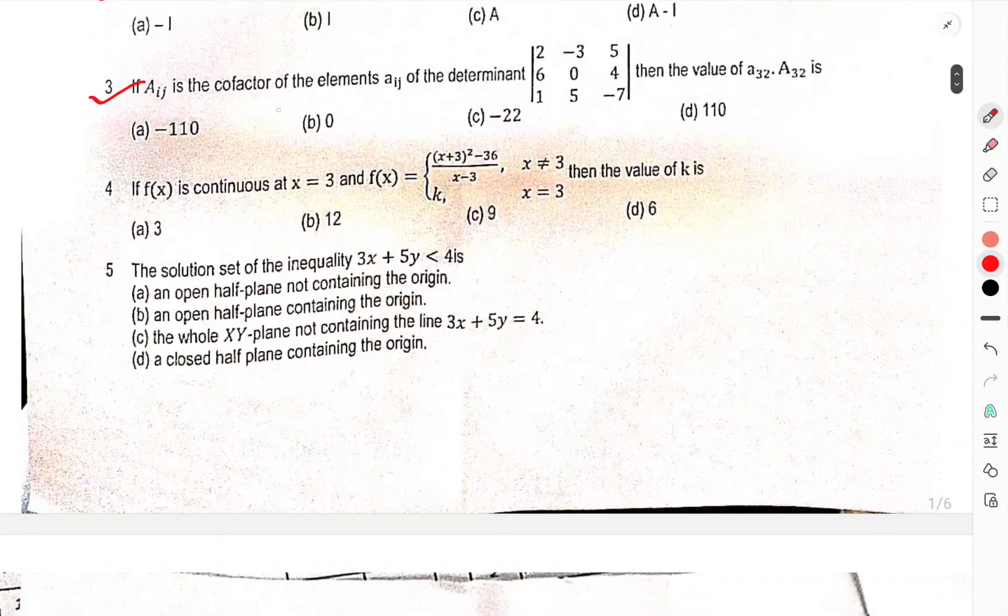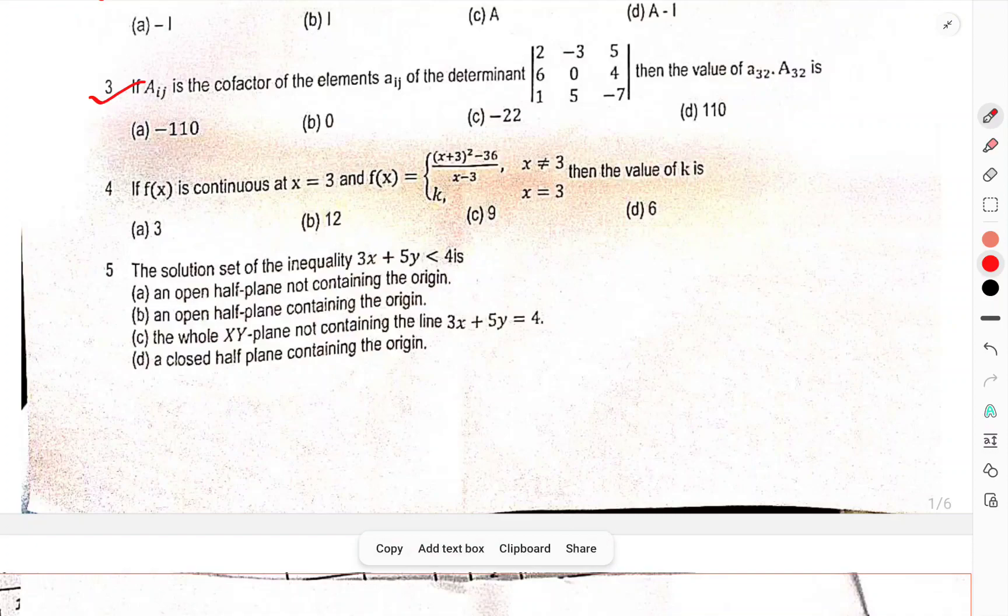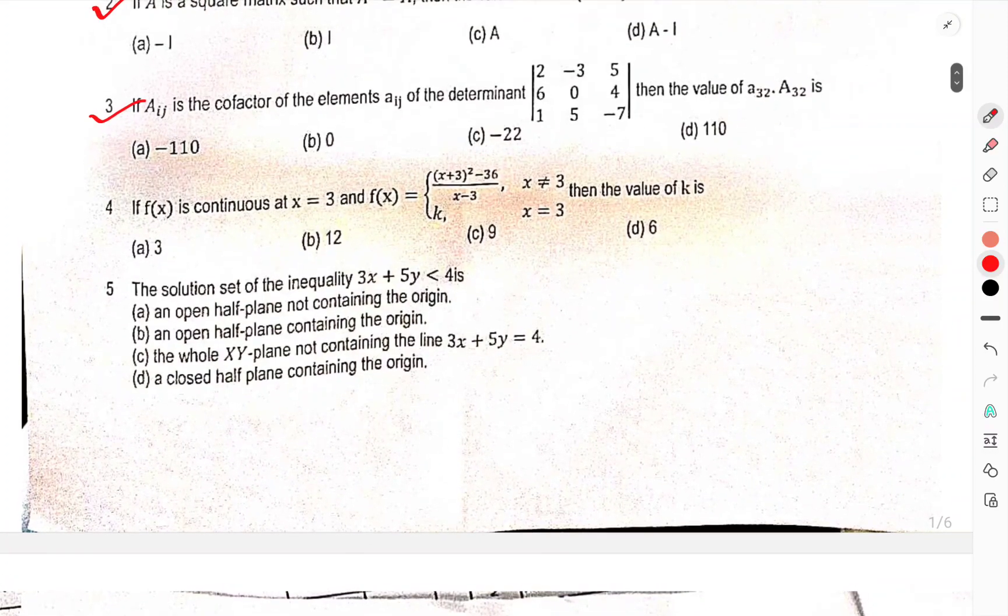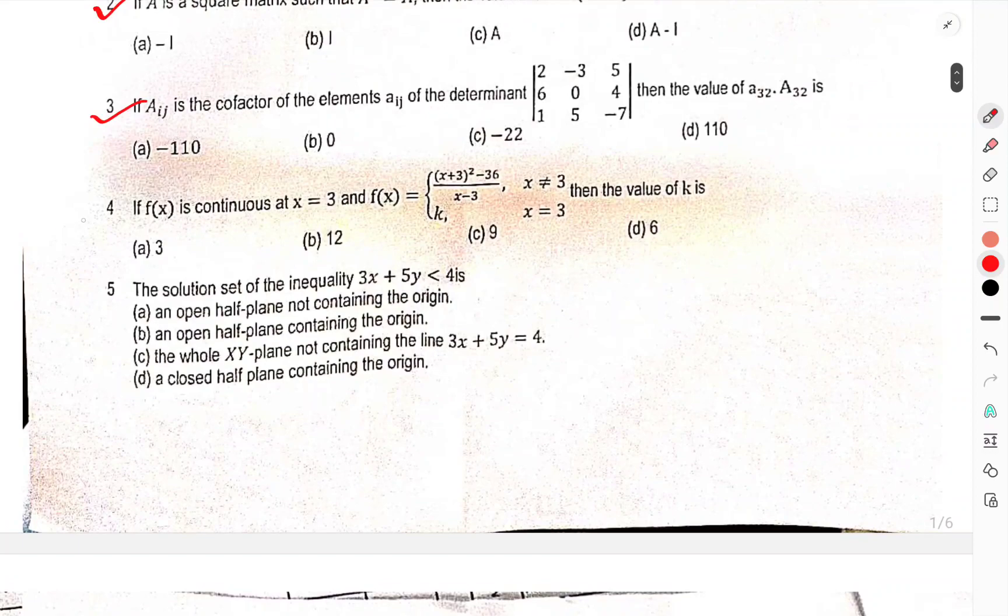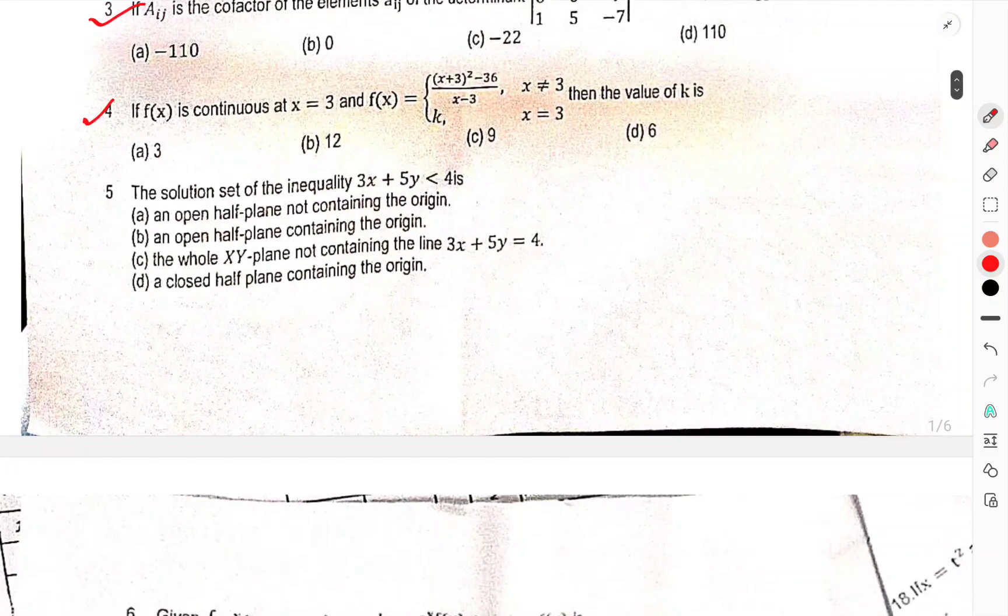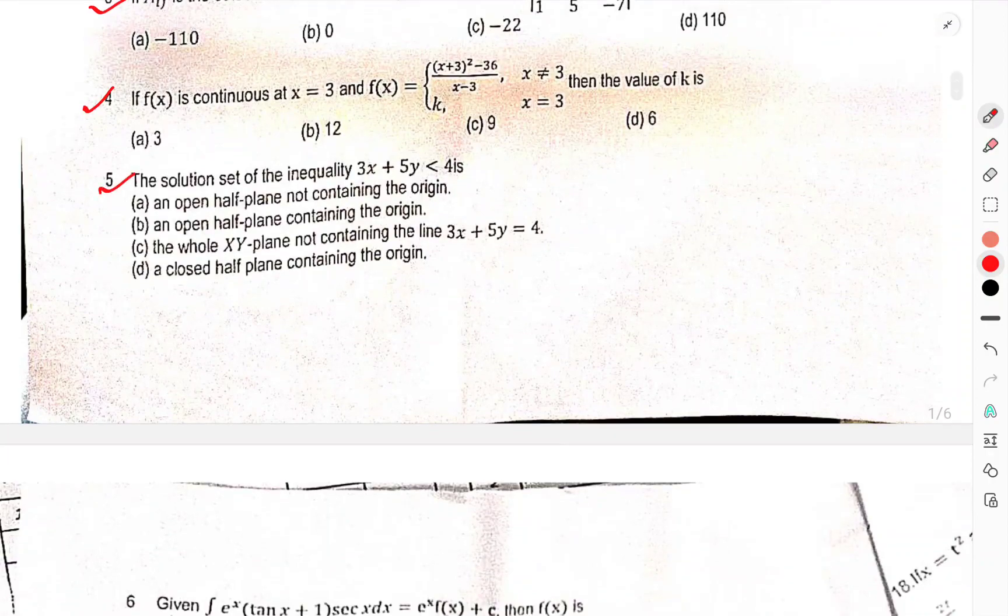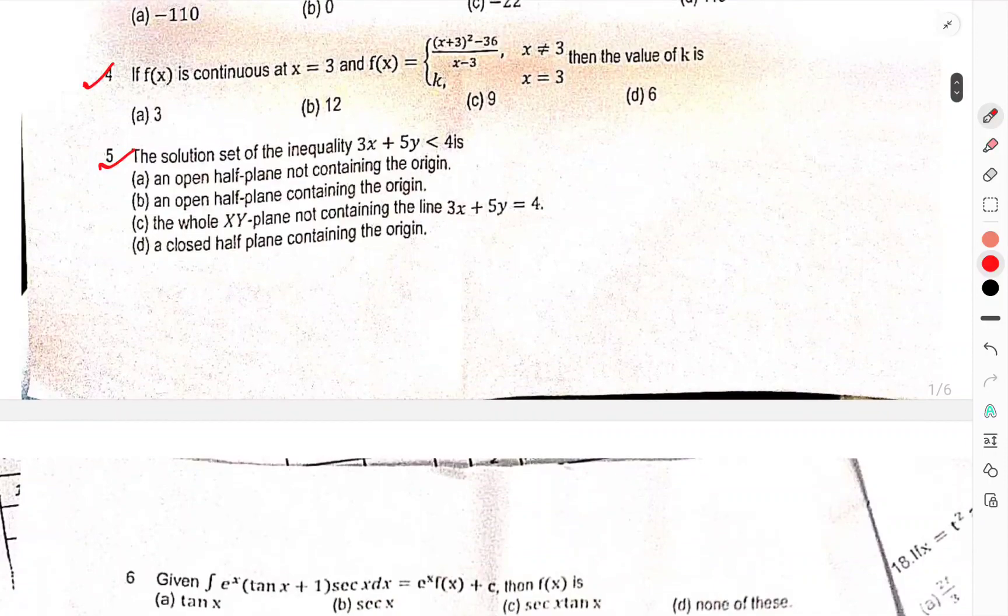Question number three, if Aij is the cofactor of element Aij, Z is the dominant of this, then the value of A32 and capital A32 is. Question number four, if FX is continuous function is equal to 3, FX is equal to X plus 3 whole square minus 36 upon X minus 3, where X is not equal to 3, then value of K is X equals to 3. Question number fifth, the solution of set inequality 3X plus 5Y is less than 4 is.